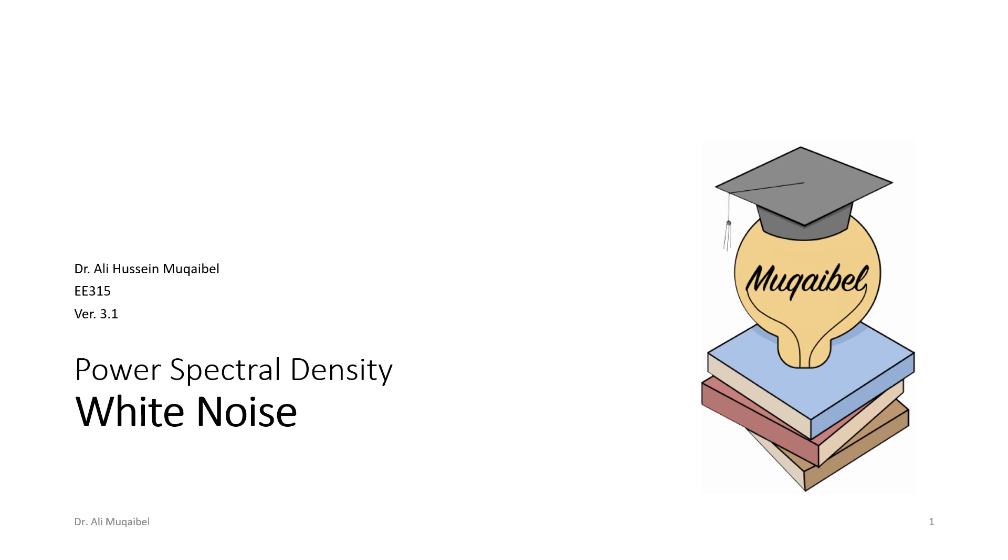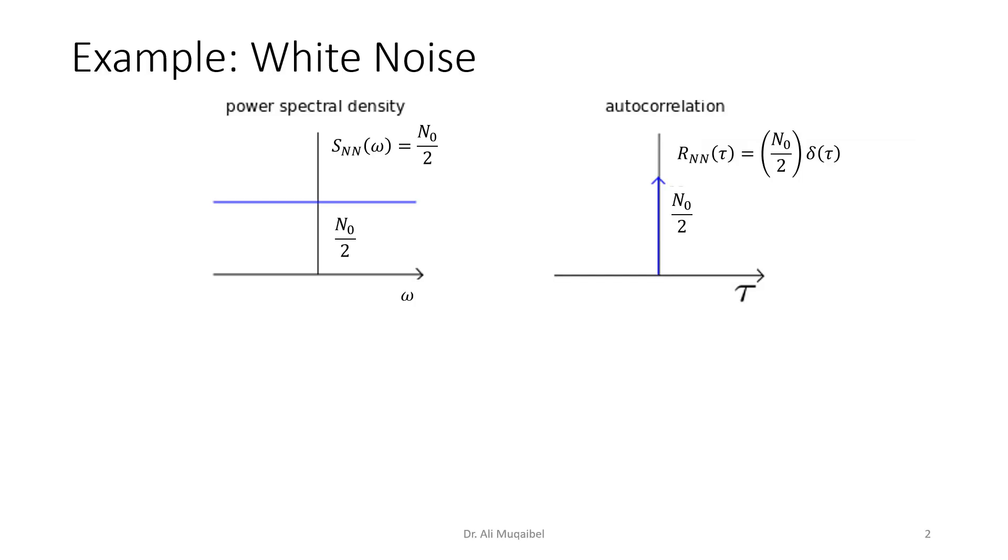We'll look at the power spectral density of white noise and also at filtered white noise, including lowpass and bandpass filtered white noise. Now we deal with a very important example of the power spectral density.